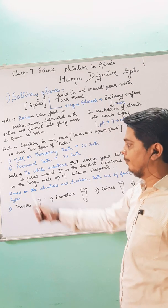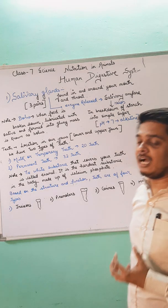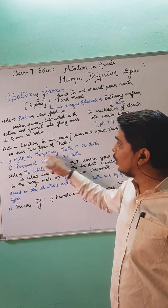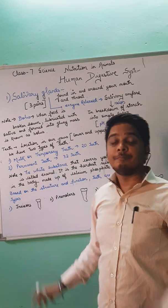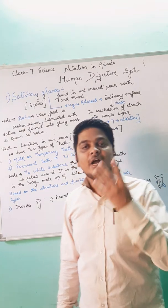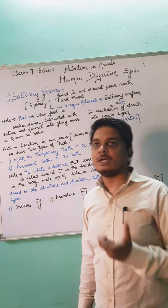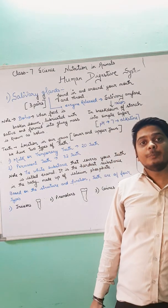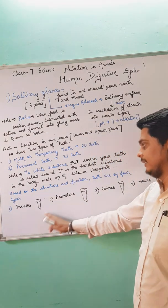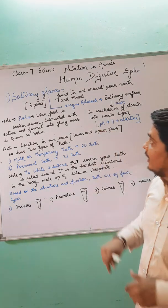Enamel is the hardest substance in the body and is made up of calcium phosphate. Based on structure and function, teeth are of four types: incisor, canine, premolar, and molar. Students, please make a note of all four names and their structures.